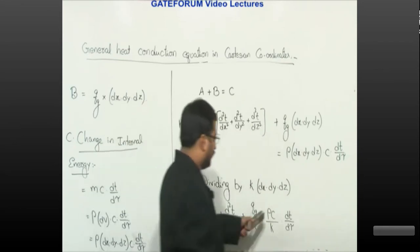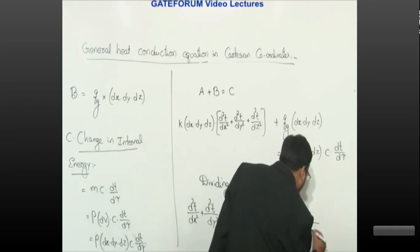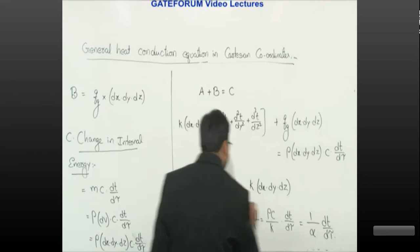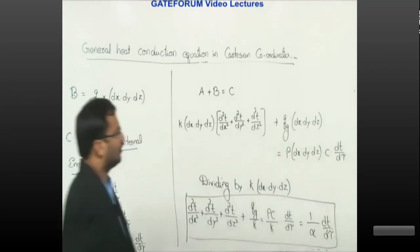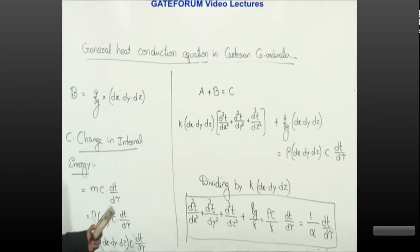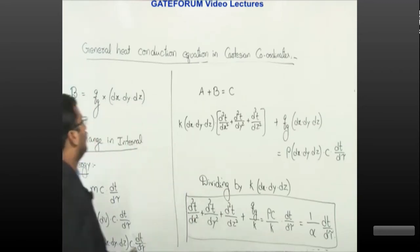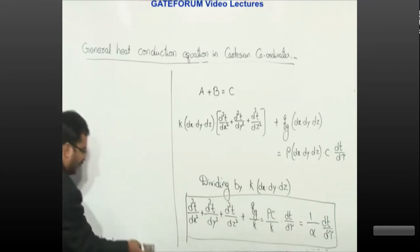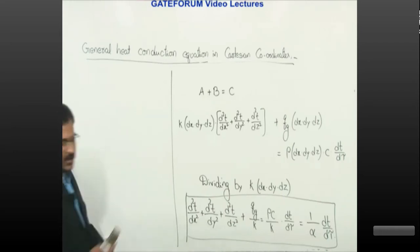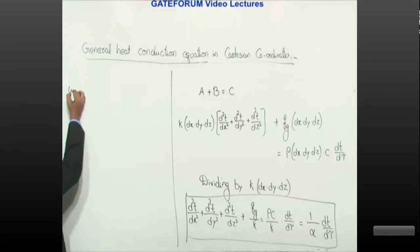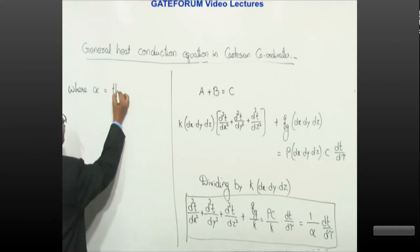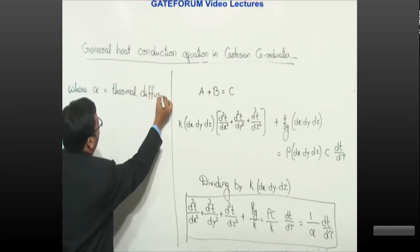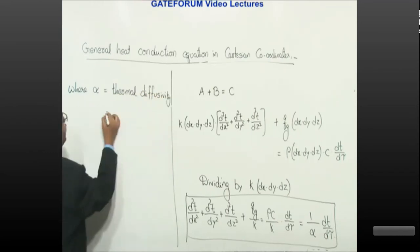This can be written as d²T/dx² + d²T/dy² + d²T/dz² + qg/k = (1/α)·dT/dτ. This is the general heat conduction equation in Cartesian coordinates, representing three-dimensional heat conduction. Here α is the thermal diffusivity, given by k/(ρc).